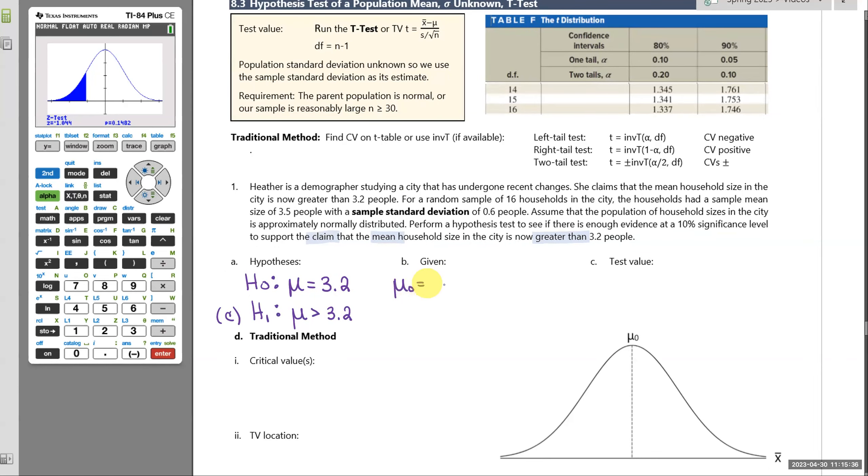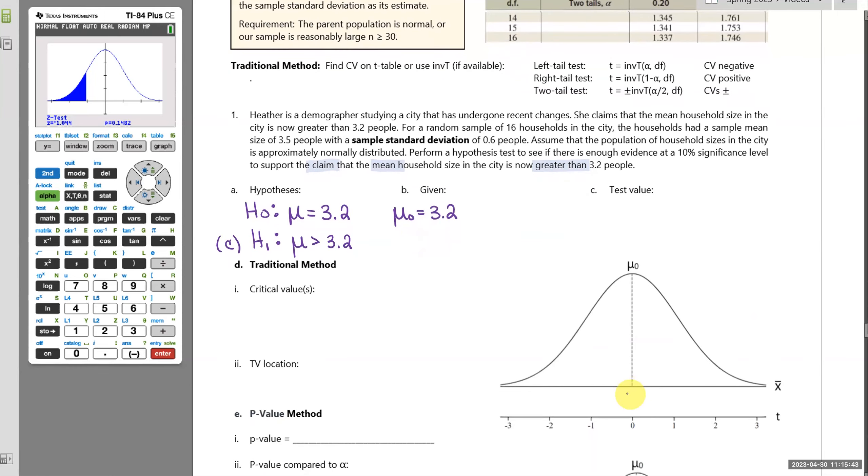It's always the same process. It's just going to be looking at given information to see the difference here. So first I'll write mu naught. So we'll assume that the null there 3.2 is true. And then we're going to go out and get some data to see if it convinces us of our claim. So they go out and get data from n equals 16 households. And for those 16 households, the sample mean came out to be 3.5 people. And the sample standard deviation, so that's S not sigma, is 0.6. The significance level they told us to use is 10% or 0.10.